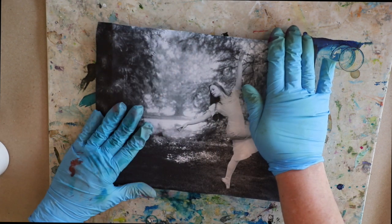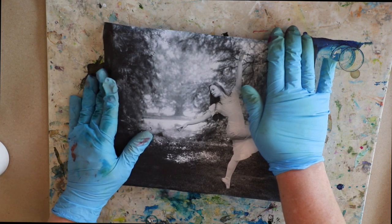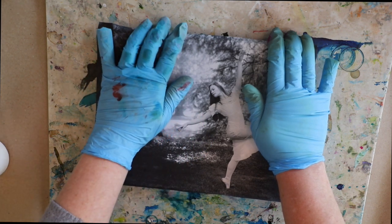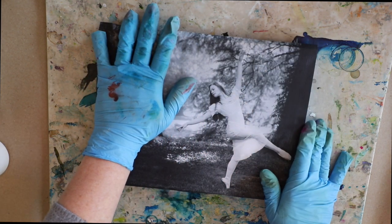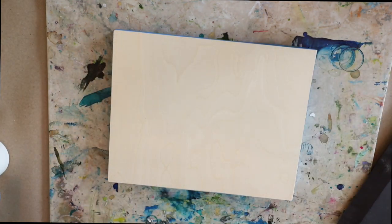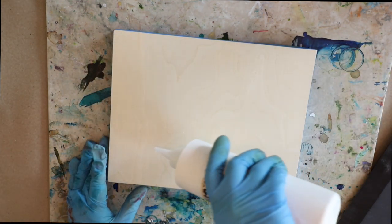On those inkjet prints you want to be careful that you don't scratch the photo, especially on this one which has a lot of dark areas and is really easily scratched. I'm just lightly going around and applying some creases to those edges so I can place it exactly where it was after I apply the glue.